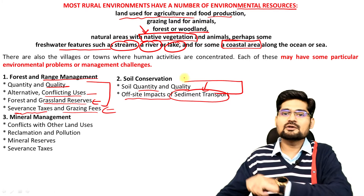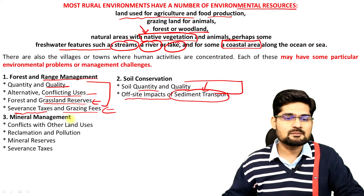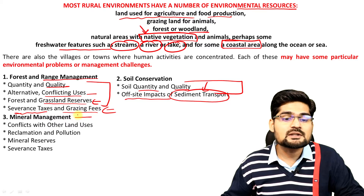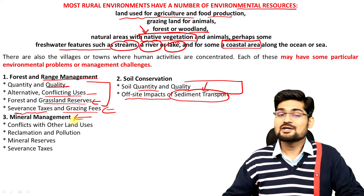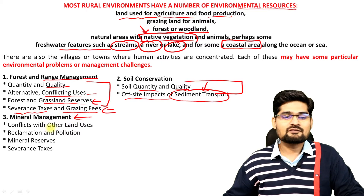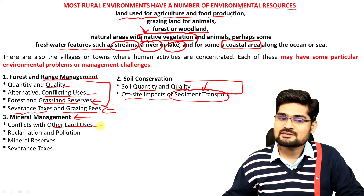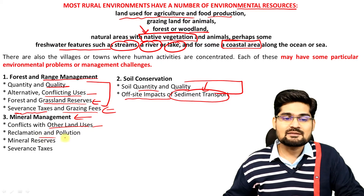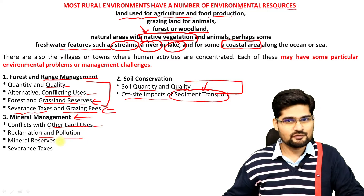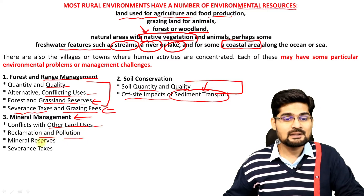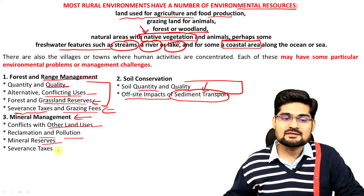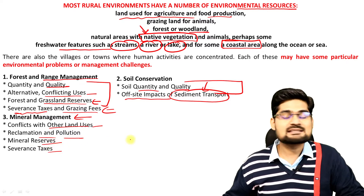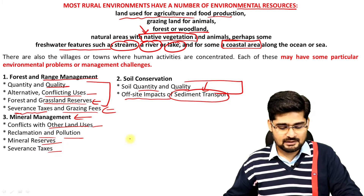The next heading is mineral management in rural areas. If you remember mining areas, there are conflicts with other land uses, then reclamation and pollution obviously is a problem, and mineral reserves and severance taxes applied on it.